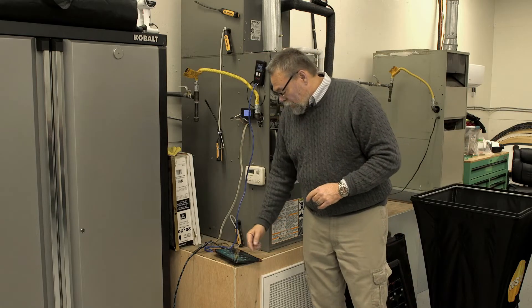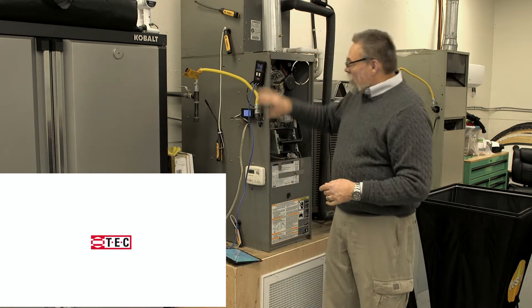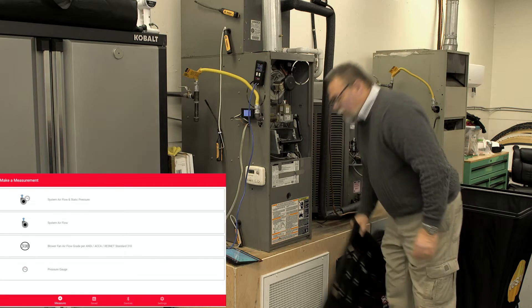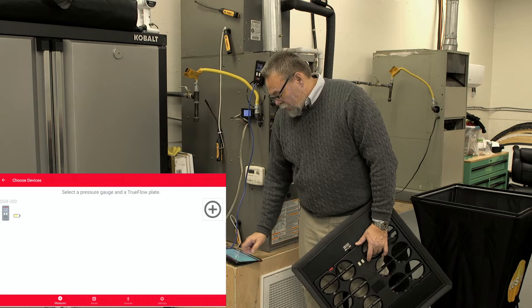Very easily, we're going to have to link our TruFlow Grid, so we're turning it on, turn on the app. We already have our manometer going, and we have our flow grid going itself. So first, I'm going to turn on what I want to do. I want to do the test for system and airflow.